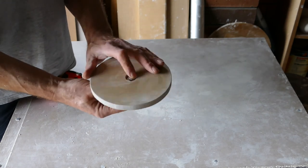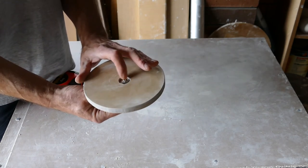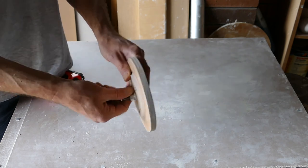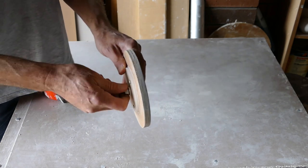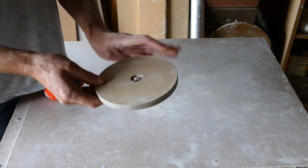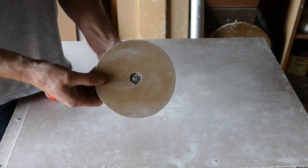But you don't need to use that. You could just use a countersunk bolt. Just countersink it into the top here with a nut underneath. Do the nut up, and then just push the bolt straight into the chuck of the drill. And that would do the same job.